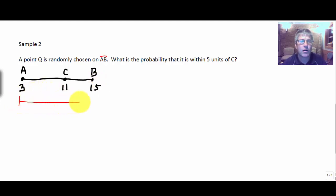What's the probability that it is within five units of point C? Well, first things first, if we choose a point on A, B, 3 to 15 is 12 units long. So this 12 is our number of possibilities, something out of 12, so that is going to be the denominator of our fraction. Now, so point Q could be anywhere on here, but what's the probability that it's within five units of C?